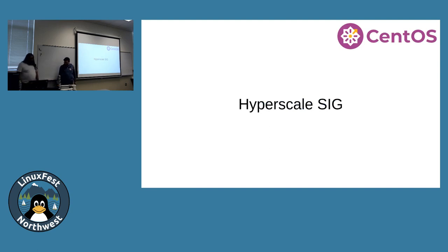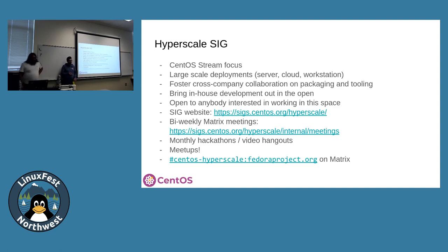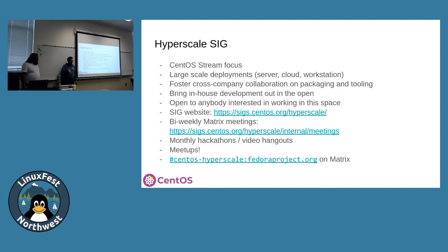Now for the fun part — let's talk about what we do with the Hyperscale SIG. The Hyperscale SIG is a CentOS special interest group that we started in January 2021. The idea was to have a place where different players in this space could work together on deploying CentOS in large-scale environments. We found that everyone deploying CentOS at large scale was reinventing the wheel and solving the same problems. A lot of companies build tooling around distributions that always stays behind closed doors, and we wanted a place where this could be published in the open and different players could cooperate.